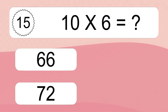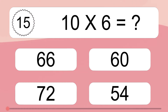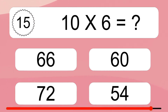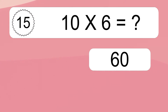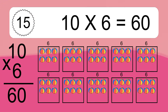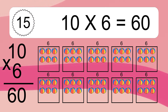10 times 6 equals what? 10 times 6 equals 60. We have 10 boxes, and each box has 6 colorful balls inside. If you count all the balls in all the boxes together, you will have 10 times 6 balls. This equals 60 balls.